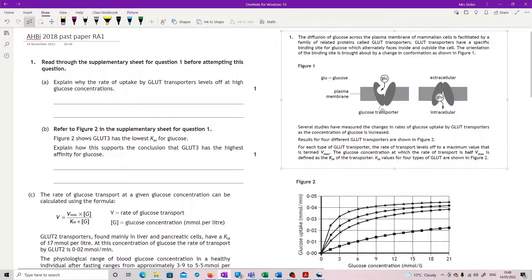That's generally what we're looking at for anything to do with proteins - we need a conformational change. So our glucose attaches to the transporter and when it does that, you've then got a shift so it can then be pushed into the intracellular. Several studies have measured the changes in rates of glucose uptake by GLUT transporters as a result of concentration of glucose increasing.